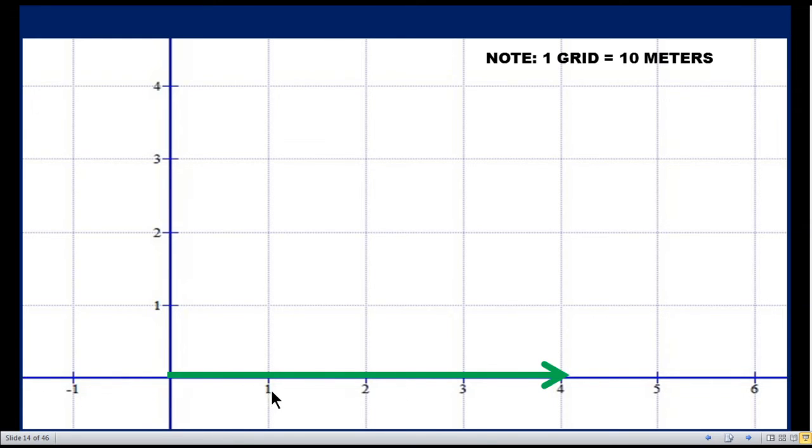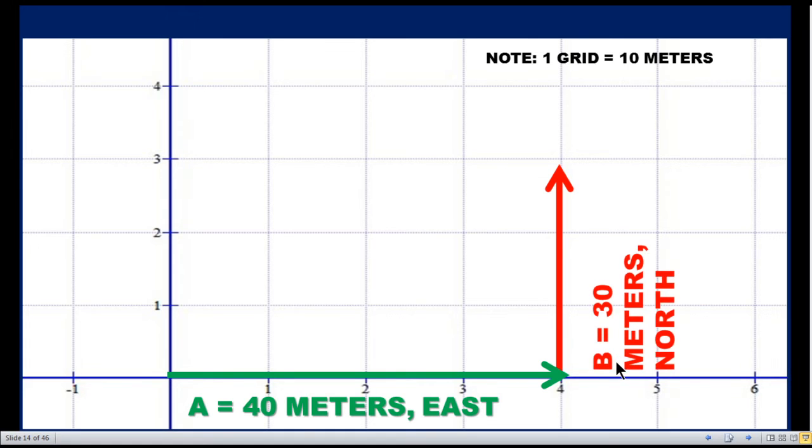From origin, tail to head, this is the head, this is tail. It is four, four means 40 meters. A man walks 40 meters east. Then the man walks 30 meters north. So what is the resultant vector?